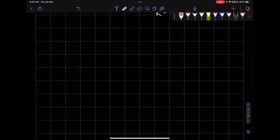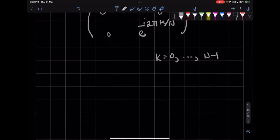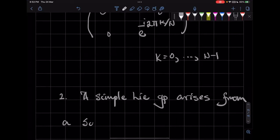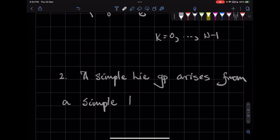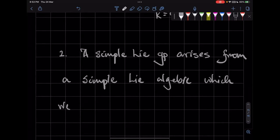Okay. So the other thing is that a simple Lie group arises from a simple Lie algebra which we shall define.